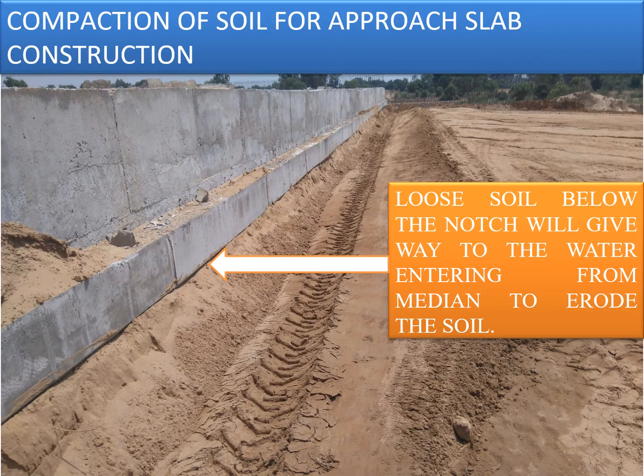Regarding compaction of soil for approach slab construction, loose soils below the notch allow water entering from the median to erode the soil. Because of the notch, rollers cannot be pushed to the end, so soil below the notch cannot be compacted properly. The notch creates a loose joint between soil and the concrete surface, and any water entering from the top will move horizontally upon contacting the notch of the structure, leading to erosion of soil along the road cross section.